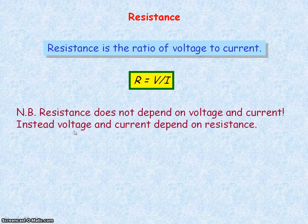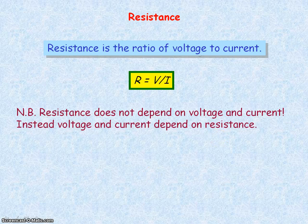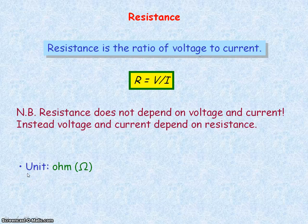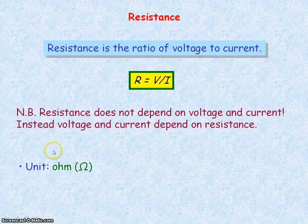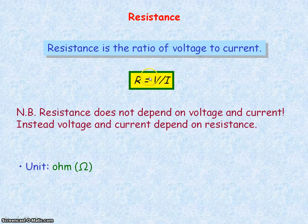The resistance of a conductor depends on the conductor itself and its dimensions. However, the voltage across a conductor and the current through a conductor does depend on the resistance of that conductor and how it's connected in the circuit. The unit of resistance is the ohm, given by the symbol capital omega. An ohm equals the unit of voltage, which is a volt, divided by the unit of current, which is ampere.